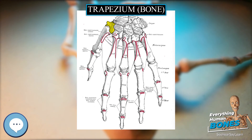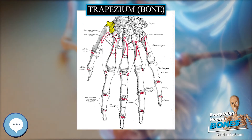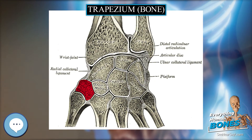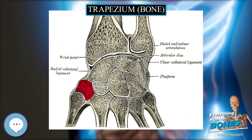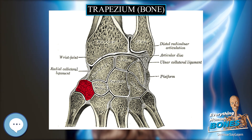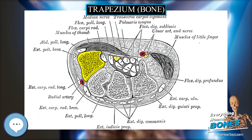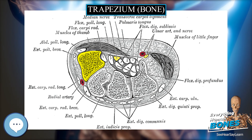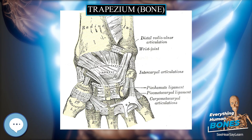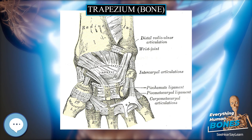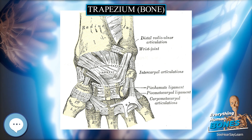Clinically, the trapezium is susceptible to arthritis at the joint with the metacarpal bone of the thumb due to overuse. The etymology derives from the Greek 'trapezian,' meaning 'a little table,' from 'trapezo' meaning table, itself from 'tetrae' (four) and 'pod' (foot). The bone was first documented in 1840.